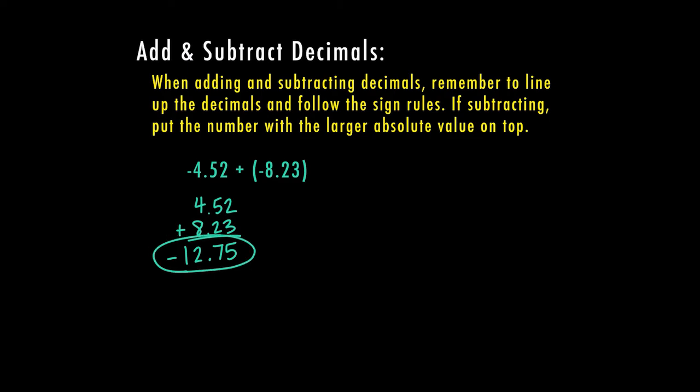So this answer ends up being a negative 12.75. Again, if these were both positive, we would still add them and keep our sign. But according to our sign rules, if they have the same sign, in this case they're both negative, I'm going to go ahead and add the numbers together and keep the sign, which in this case, they're both negative.